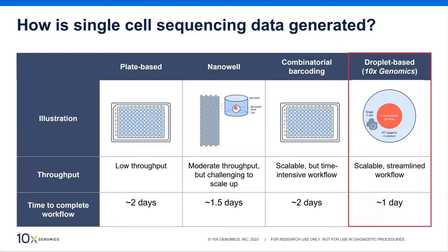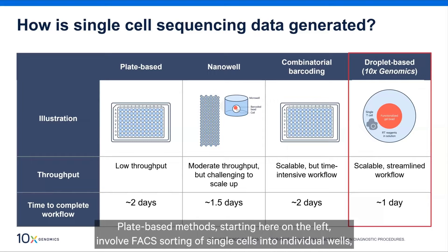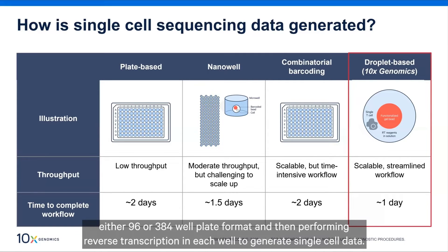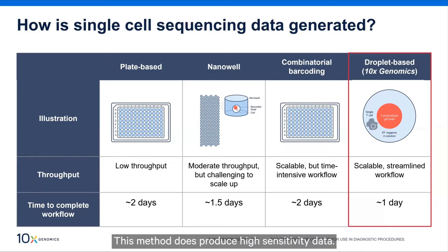Plate-based methods, starting here on the left, involve fixed sorting of single cells into individual wells — either 96 or 384 well plate format — and then performing reverse transcription in each well to generate single-cell data. This method does produce high sensitivity data, but it is relatively low throughput and takes about two days to complete.